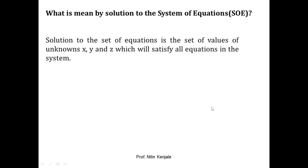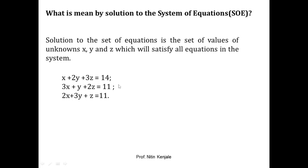Now we see what is called the solution to the system of equations. The solution is the set of values of x, y, and z which will satisfy all the equations in the system. For example, consider this system of equations — if we substitute x=1, y=2, and z=3, we see that all the equations are satisfied. You can pause the video and cross-check. So we say that (1, 2, 3) is the solution to this system.